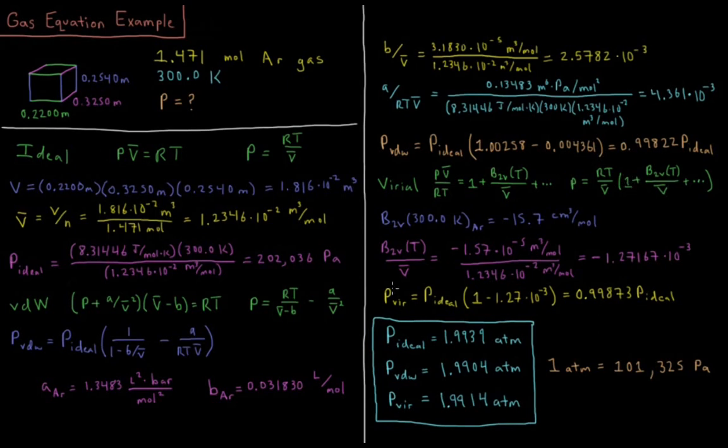So the virial pressure equals the ideal pressure, RT over V-bar, times 1 minus 1.27 times 10 to the minus 3, or 0.99873 times P-ideal. So once again, the ideal gas equation is within about 2% of the virial equation here. If I included the third virial coefficient, it wouldn't make a contribution at any of these digits because the pressure is too low for it to matter yet.